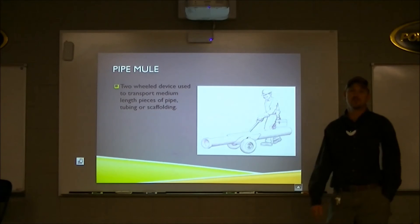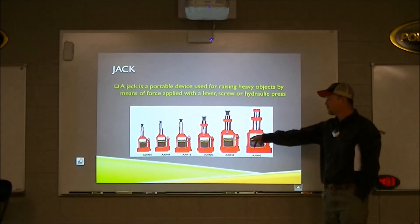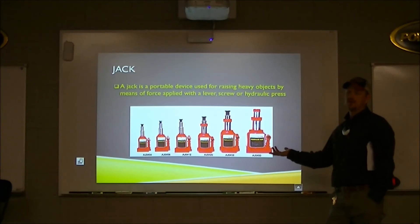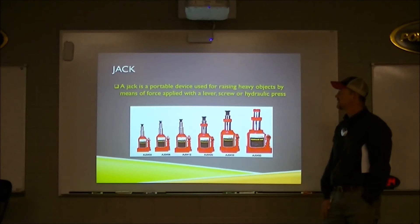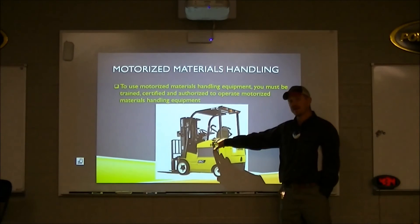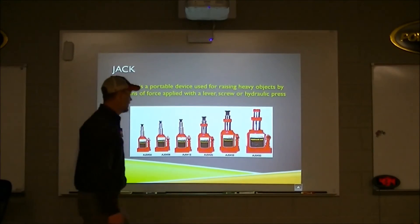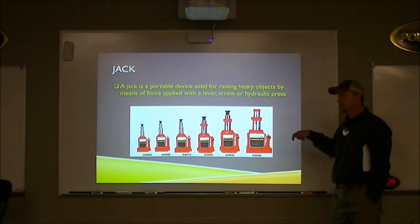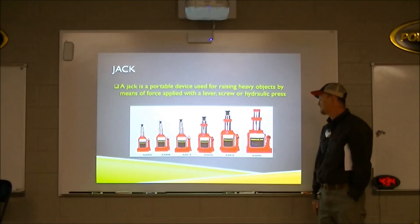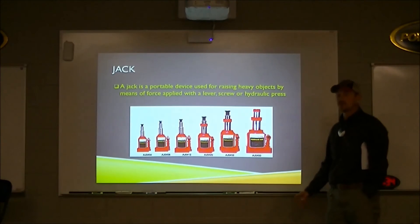You'd prefer the roller skids with spikes to improve grip, but you can't always have what you want. This is a pipe mule — a small cart where you put the pipe on it, balance it, and roll it wherever you're going. These are bottle jacks. They're used for lifting heavy objects using hydraulic pressure. You put a pipe in the handle on the side and pump it up and down to increase hydraulic pressure, causing the piston to raise. This is a 50-ton jack — pretty stout. You can get these at Walmart.